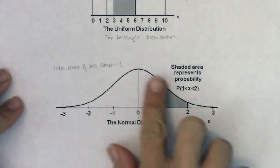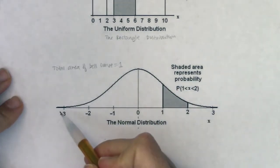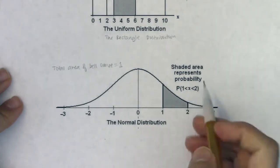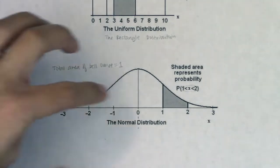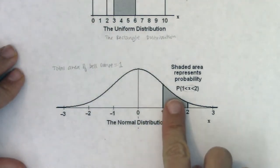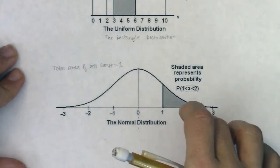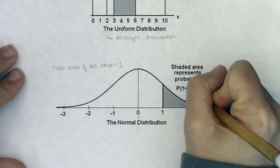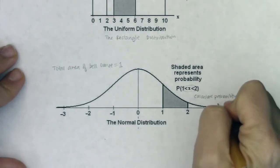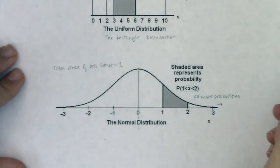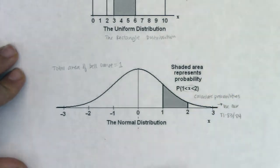The same two properties apply to the bell curve: the total area has to equal one, and the curve can't dip below the x-axis. In the next example we're going to spend time on the uniform distribution, then we'll lead up to the standard normal and the regular normal curve.